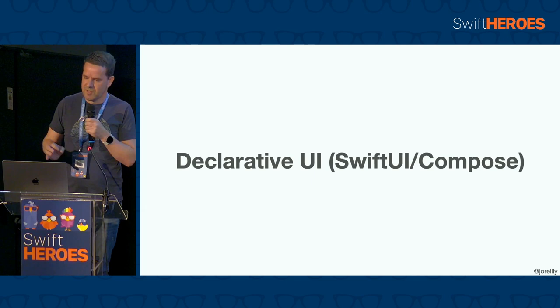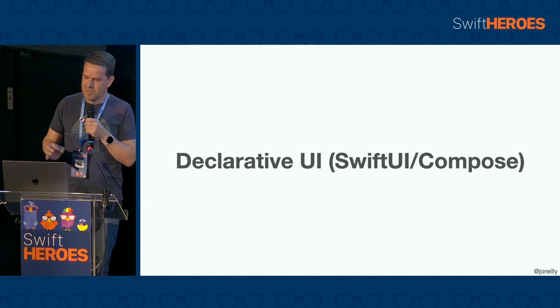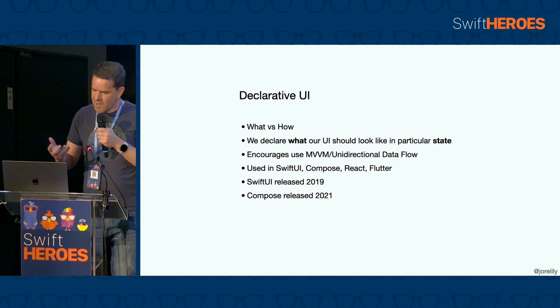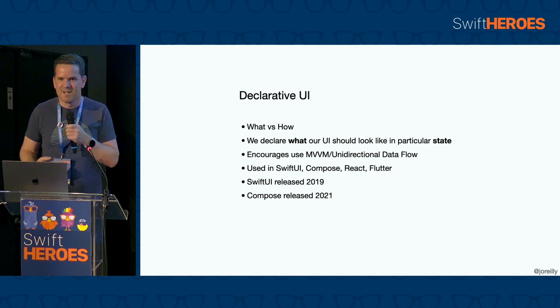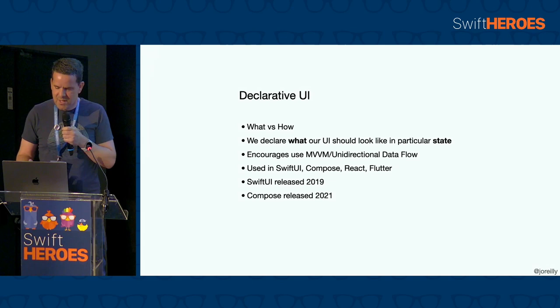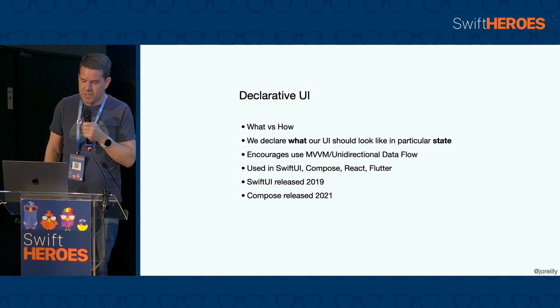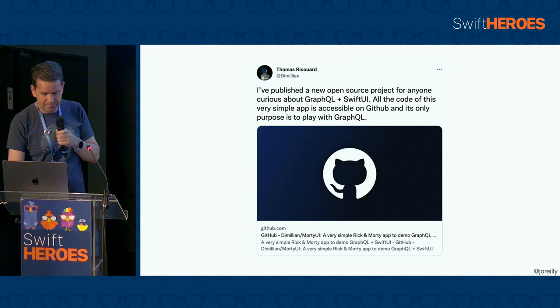We're getting to the comparisons that I think are the more impactful similarities we have today — firstly, the use of declarative UI frameworks on both platforms: SwiftUI on iOS and Compose on Android. A common way of explaining declarative UI is in terms of the what versus the how. With declarative UI, we declare what our UI should look like in a particular state. Any changes in state cause the appropriate parts of our UI to be re-rendered or recomposed. This approach also encourages use of MVVM on both platforms, and it's also the approach used in React and Flutter.